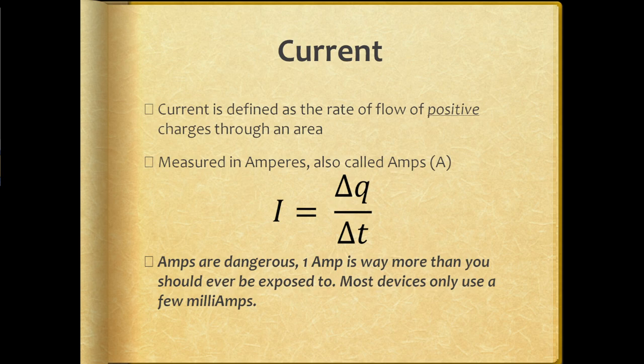I bring this up to say that one amp of electricity is huge. Kind of like how you'll never really see an entire coulomb of charge built up in nature, you'll never really see one amp of electrical current most of the time, for safety reasons. Current is the dangerous part of electricity. You might hear in movies or in warnings that a device has 10,000 volts of electricity — but volts isn't what kills you. Volts is like water pressure; it's just the force, the pressure that drives electricity to move. You can have high voltage without any electricity moving.